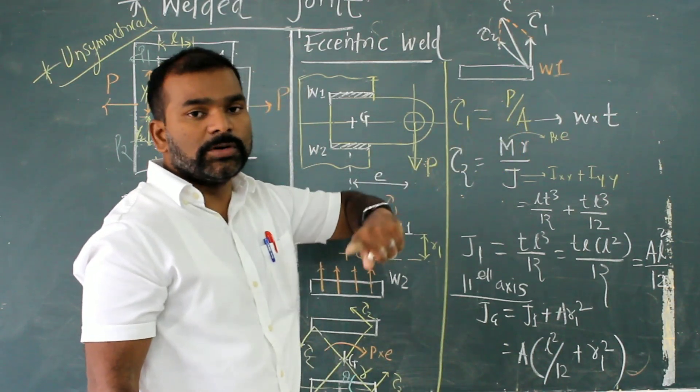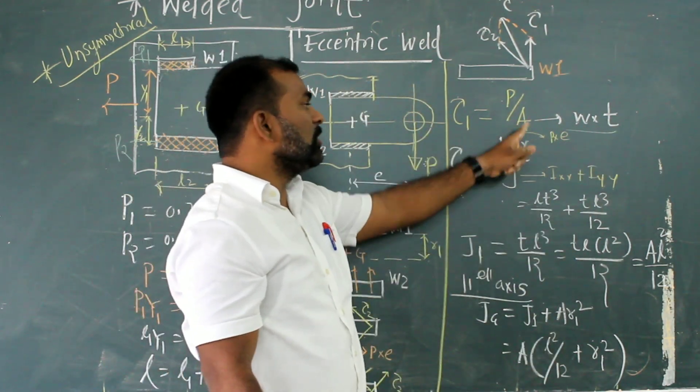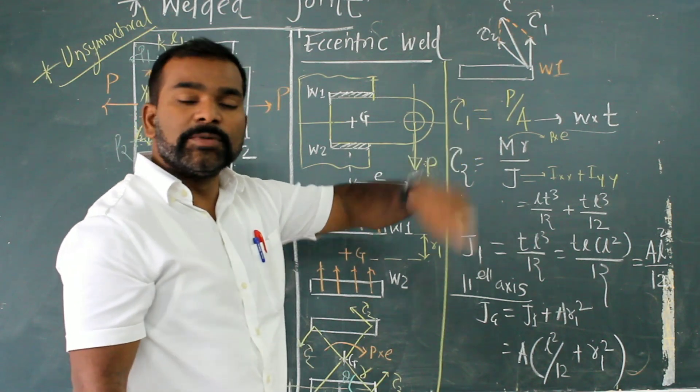So this is area of weld. That is why area of weld I can calculate W into T. If I put this value, I will get primary shear stress.